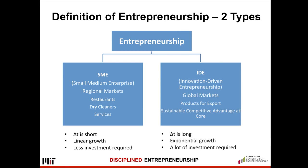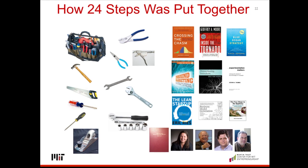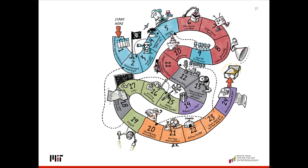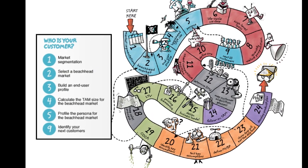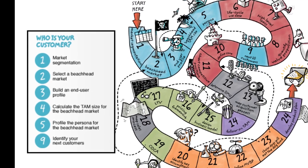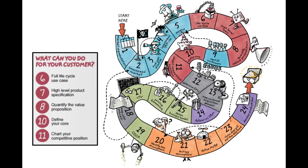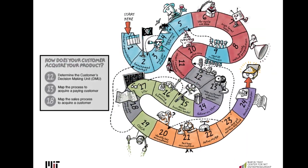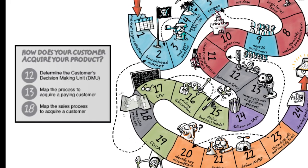Bill Aulet talks about 24 steps, and the ideas for those 24 steps come from a lot of the existing literature about innovation and entrepreneurship. It's a model with a long continuous line as shown here. The first step is: who is the customer? Who do we actually develop something for? It can be to identify the market segment or to build up an end user profile. The next step is to figure out what we can do for these customers — what is our core idea, what is our competitive position, and how does the customer acquire our product? If we develop something, how can we be sure there is a sales process, and how do we make money from disseminating the product to our customers?